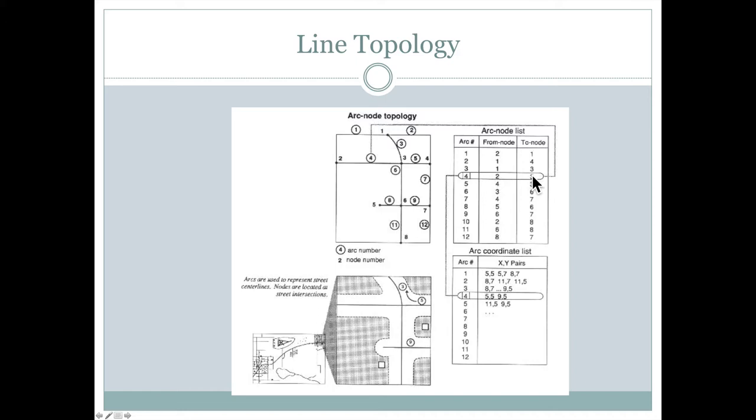This is really important if, for example, we were trying to do some networking and there were some one-way streets in this area. We could tell the GIS would understand whether something was a one-way street and if so, in which direction people were allowed to drive on it. So that's what line topology is.